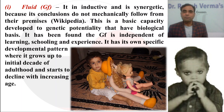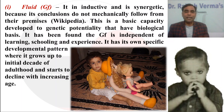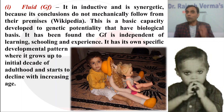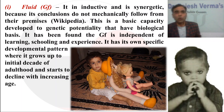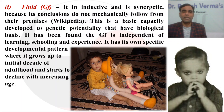GF has been found to be independent of learning, schooling, and experience. Because GF, as Cattell said, is your innate or genetically defined capacity, it is free from those factors. It has its own specific developmental pattern where it grows up to the initial decade of childhood and starts to decline with increasing age. Fluid intelligence grows up to a certain level — roughly when adolescence ends and adulthood begins — reaching its fullest level of development.